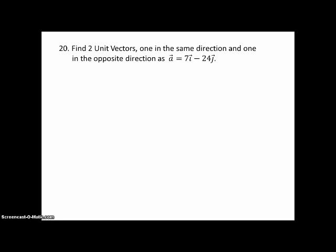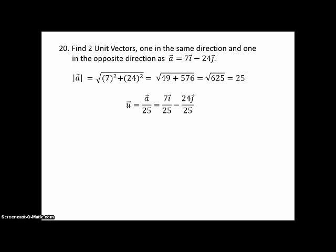Okay, here's another example from your book. Find two unit vectors. One in the same direction and one in the opposite direction. As a, vector a, which equals 7i minus 24j. Well, this is kind of easy. The first thing we need is the length, norm, or magnitude. And that comes out to 25. Isn't that nice? And so that means this vector is 25 units long. So in order to make it one unit long, we have to divide by 25. And then to get one in the opposite direction that's one unit long, we just take the opposite of it. And there you go.